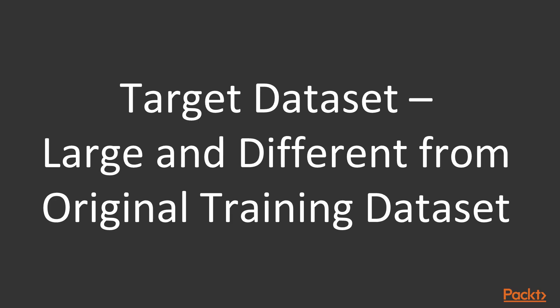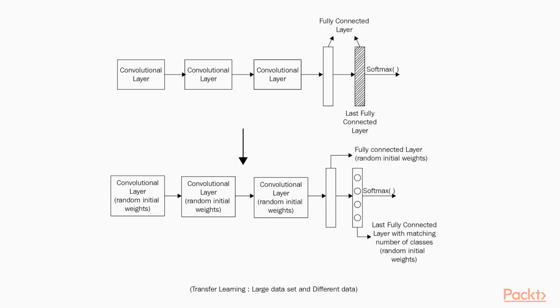The last case is where the target dataset is large and different from the original training dataset. Here we remove the last fully connected layer and replace it with a fully connected layer matching the number of classes in the target dataset. We then train the entire network from scratch with randomly initialized weights.